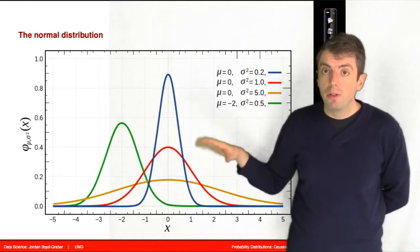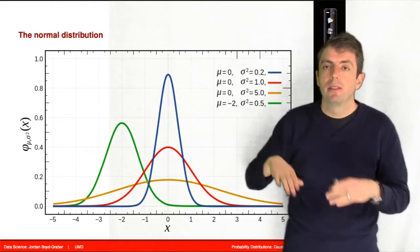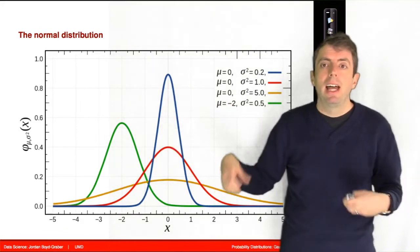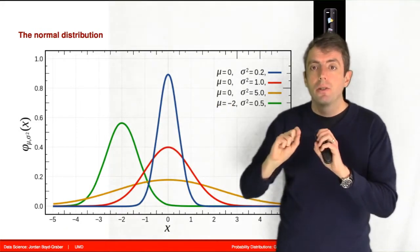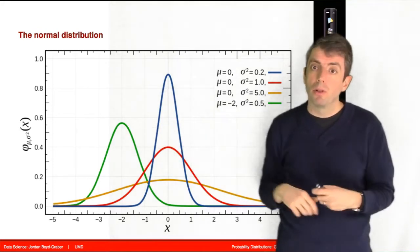In gold, you have what's called a fat tail distribution, so a very large variance. It's very spread out. And this means that your data aren't particularly clustered around a mean. It's more spread out, more uniform-like.